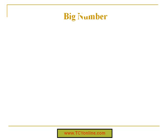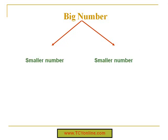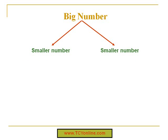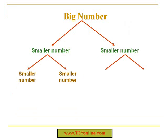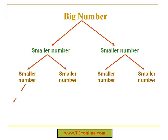Now let's see how this factor tree looks. A factor tree is used to break a big composite number into smaller prime numbers. So we start with a big number, which can be written as two smaller numbers. Those two smaller numbers can be further divided into other smaller numbers, and each of these can be broken down further until we get prime numbers.